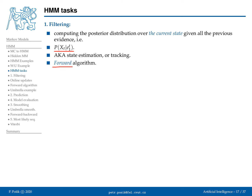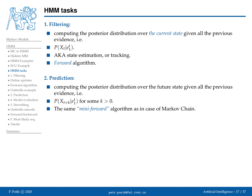During last week's exercises we implemented the forward algorithm that performs filtering, and most of you implemented it quite well. The second task is prediction: predicting some future state given a sequence of observations. This is essentially two algorithms applied in sequence — you first apply filtering to estimate the distribution of x_t given the observation sequence, then apply the mini-forward algorithm from x_t onward to find the distribution over x_{t+k}, since from t+1 to t+k there are no observations.